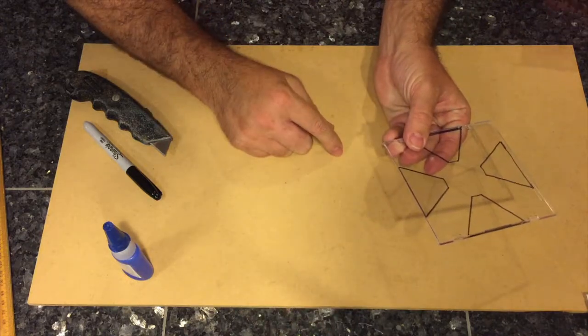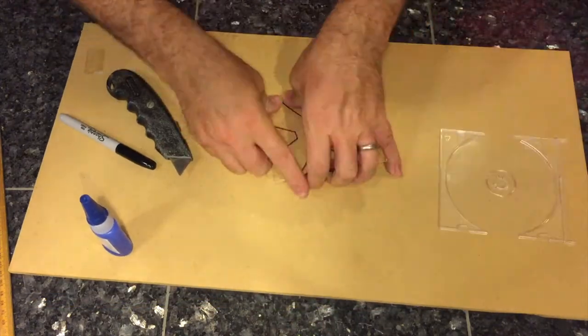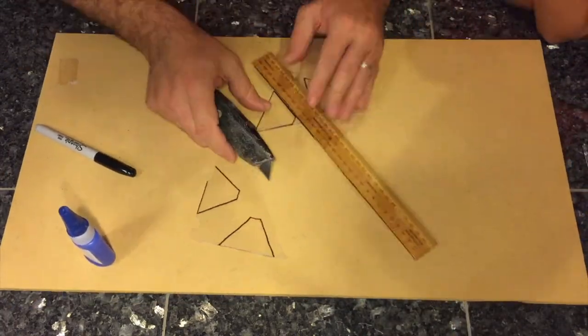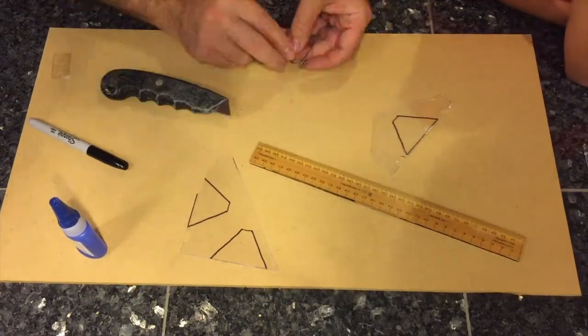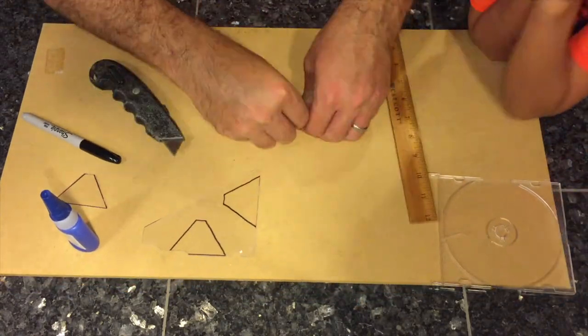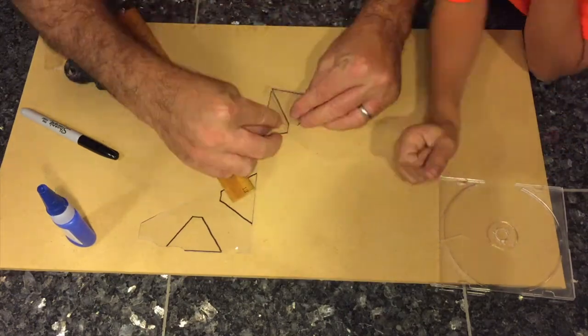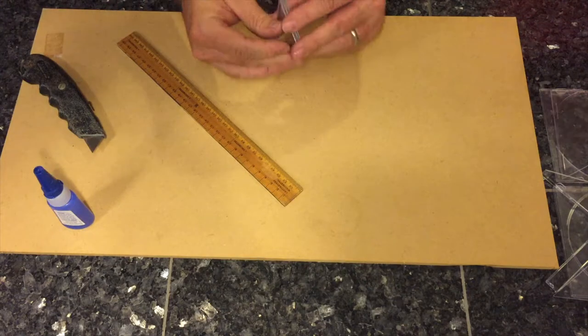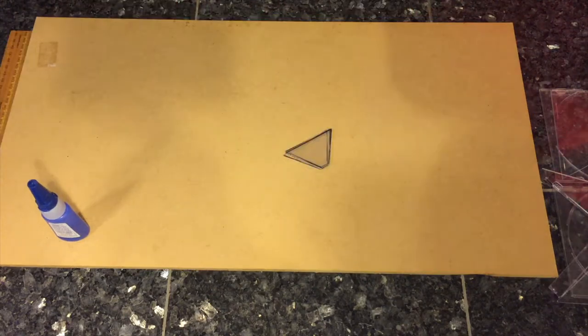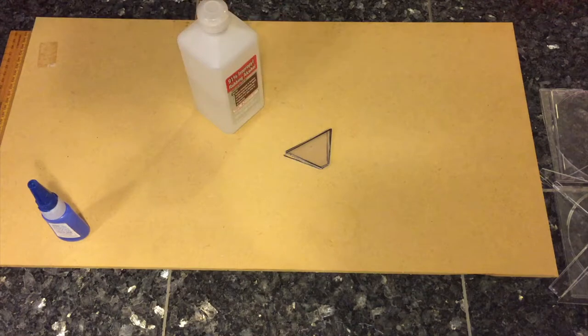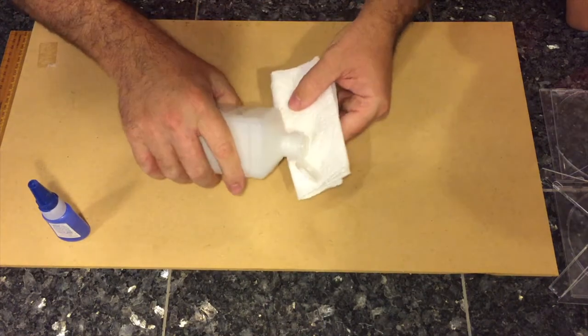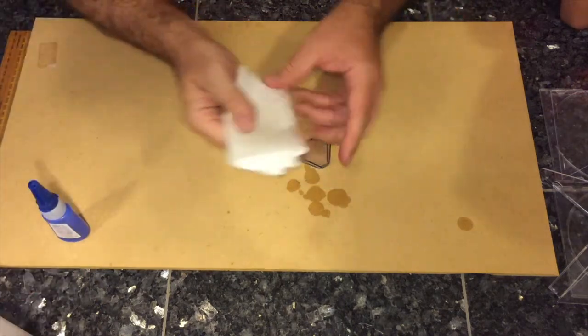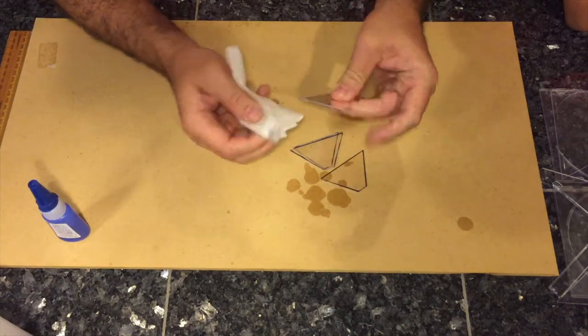Now we have a nice smooth line there. We got to clean these up because we don't want those black lines on there. We've got some 91% rubbing alcohol, and then we just put some of it on there like that. Look at that.